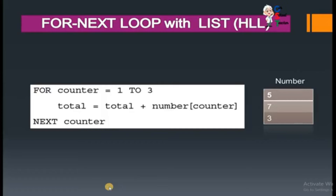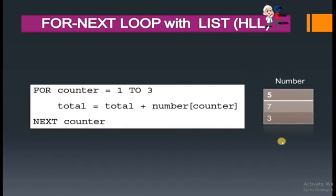Here we have a simple program — you can think of it as pseudocode, or like a program written in BASIC. This is a simple for-next loop with three iterations. In these three iterations, a list of three elements — their numbers — are being summed, and the sum is being stored in total. The first time the value of counter will be one.